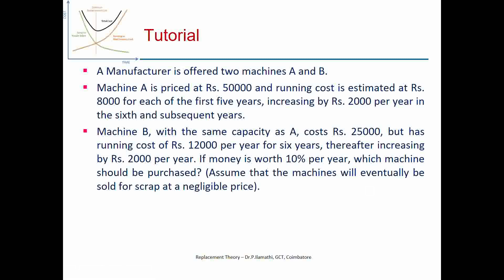Next comes the tutorial problem. A manufacturer is offered two machines A and B, with data given for each, and money is worth 10% per year. You have to calculate the optimum replacement period and the weighted average annual cost for both machine A and machine B. After calculating these values, the best machine should be selected based on the lower weighted average annual cost.